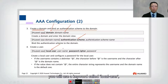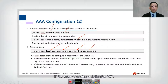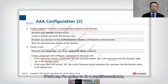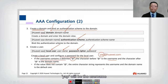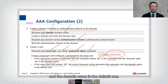In the AAA domain, specify the authentication scheme name that was just created. You also need to create a user if you are using local authentication. Use the keyword 'local-user', specify your username, followed by 'password cipher' and your password. If the username contains an '@' delimiter, the character before it is the username and the character after it is the domain name — for example, 'yep@huawei.com'. If no delimiter is present, the entire string is the username and the default domain is used.